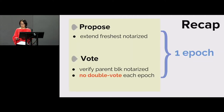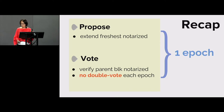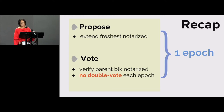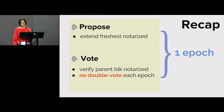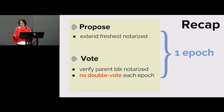Quick recap: the most natural protocol goes by epochs — propose, vote, propose, vote. When I propose a block, I have to choose which parent my block extends from, and most naturally I pick the freshest notarized block currently in my view. When I vote, there's no double voting. Also, if I receive a block whose parent hash is something I don't recognize — if I cannot find any prefix of the chain matching the parent's hash — this block might be from a malicious proposer. I won't vote for any block unless I've seen the parent block and also a notarization for the parent block.